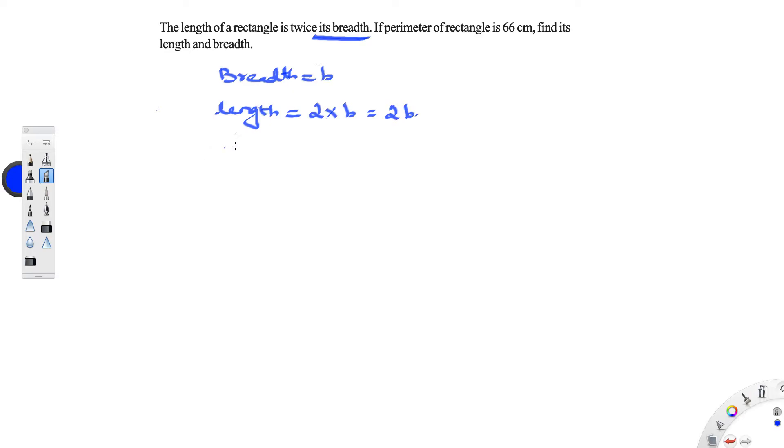The perimeter of the rectangle they have given. So you have a rectangle. Here the length is 2b. Breadth is b.